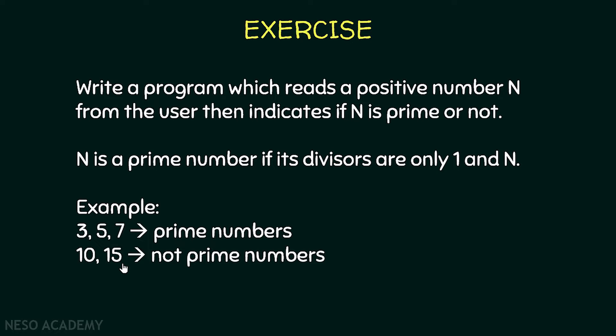We are going to solve this exercise in two ways. In the first way, since the divisors of a prime number are only 1 and n, the sum of its divisors is 1 plus n. In other words, the sum of the strict divisors should be equal to 1. So to find if n is a prime number, we will calculate the sum of its strict divisors. If the sum equals 1, then n is prime; if not, then n is not prime.